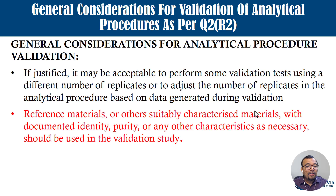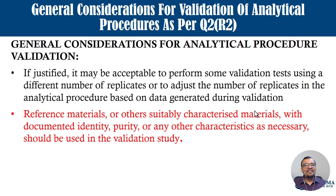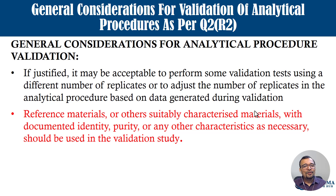Reference materials or other suitably characterized materials with documented identity, purity, or other necessary characteristics should be used in the validation study. To confirm the trueness or accuracy of your analytical procedure, you compare test results using valid reference materials — how much was spiked and how much was recovered. You should have a reference standard with known potency or purity with a certificate of analysis. A fully characterized working standard can also be used.